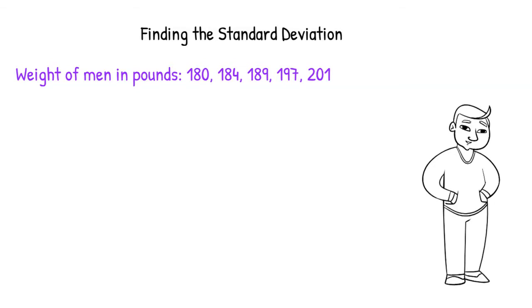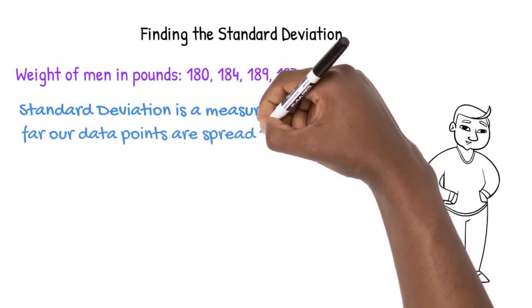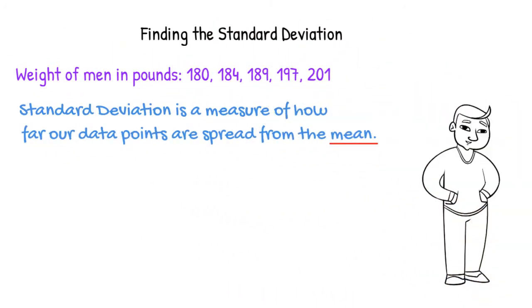In this video, we will look at how to find the standard deviation of a list of numbers. Standard deviation is a measure of how far our data points are spread from the mean.